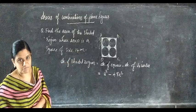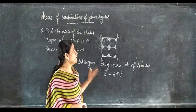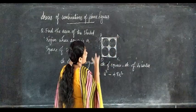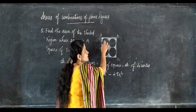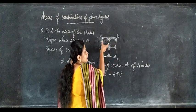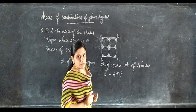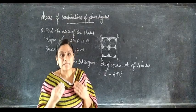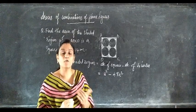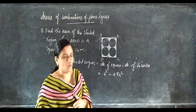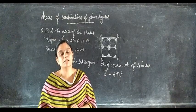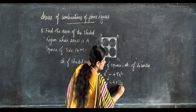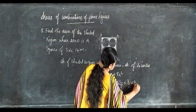We don't know the radius of the circle. Side AB equals 14 — two circles fit along that side, so the diameter of one circle is 7 cm, and the radius is 7 by 2. Substituting: 14 squared minus 4 into 22 by 7 into 7 by 2 into 7 by 2.